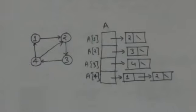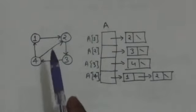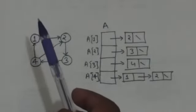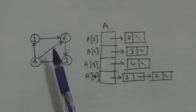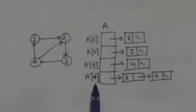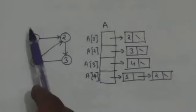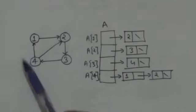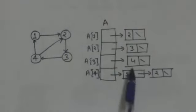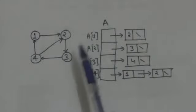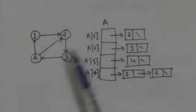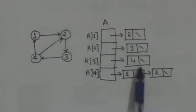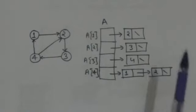Now see vertex 4. Vertices 1 and 2 are adjacent to vertex 4 in this graph. So A4, the fourth element of array A, represents a linked list of vertices which are adjacent to vertex 4. This linked list contains the vertices 1 and 2. In this way we can represent a graph by adjacency list.